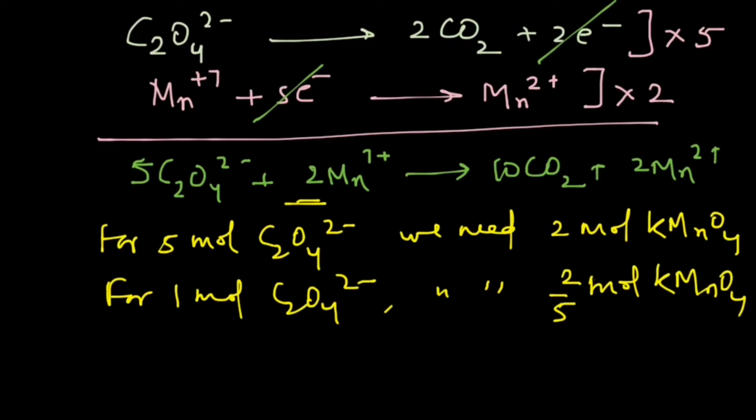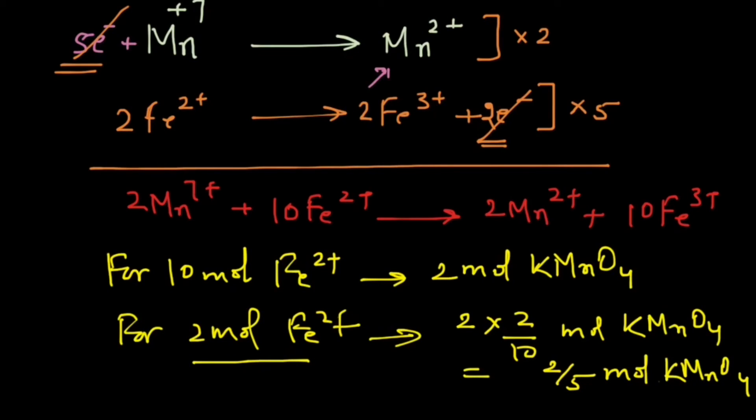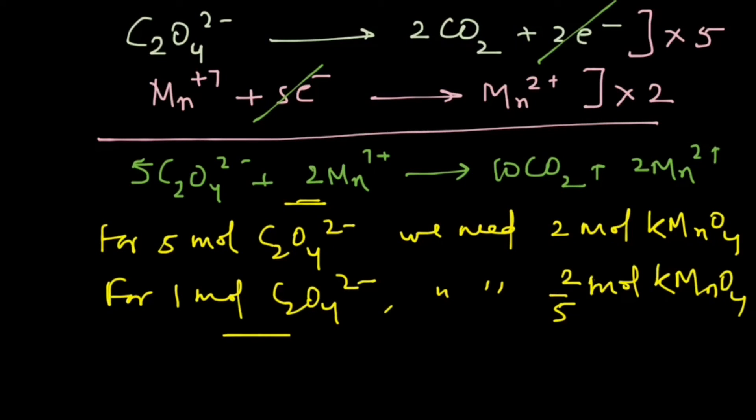Now here is the final answer: for 2 moles Fe2+ we need 2/5 mole KMnO4, and for the oxidation of 1 mole C2O4 2- we need 2/5 mole KMnO4. So the total amount of KMnO4 required will be equal to 2/5 for Fe2+ and 2/5 for the oxalate ion, and that gives us the answer as 4/5 mole.